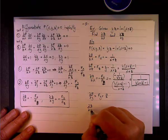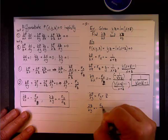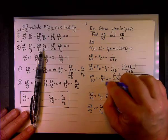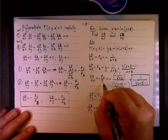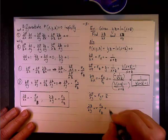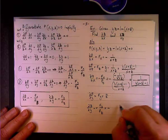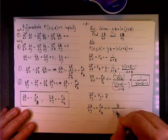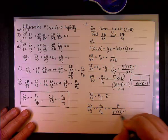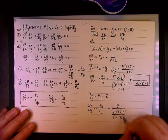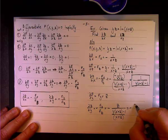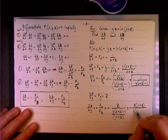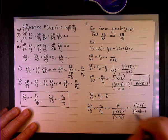So, ∂z/∂y equals negative f_y divided by f_z. So, it's negative z divided by y times (x+z) minus one over x plus z. So, it's equal to negative z times (x+z) divided by y times (x+z) minus one.